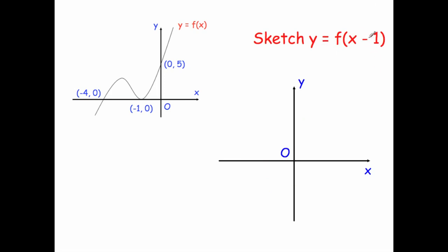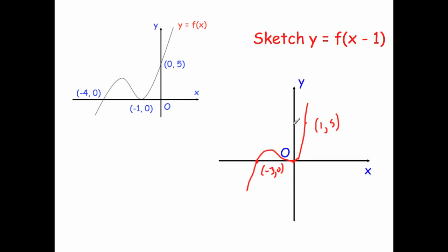Next, y equals f of x minus 1. You'd think it moves one square to the left, but it moves one square to the right. So (0, 5) moves to (1, 5), (-1, 0) moves to the origin (0, 0), and (-4, 0) moves to (-3, 0). Drawing the curve: it comes up, turns at the origin, and curves up through (1, 5) — the graph has moved one square to the right.